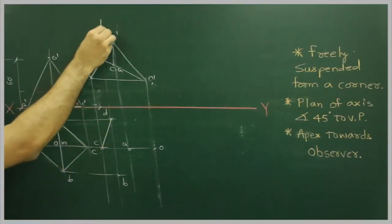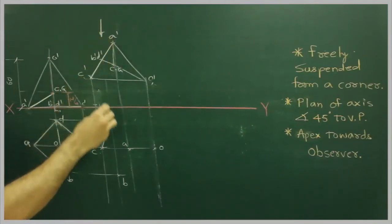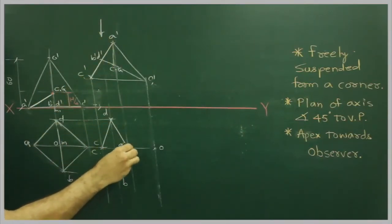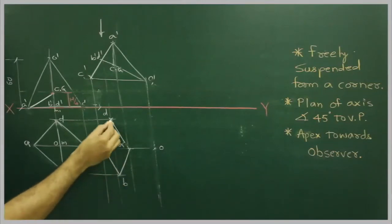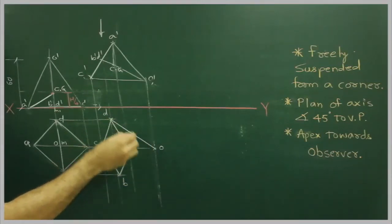Now, and also we will see from the top, we can see this part. So A, B, C will be dark. Outline will be dark.